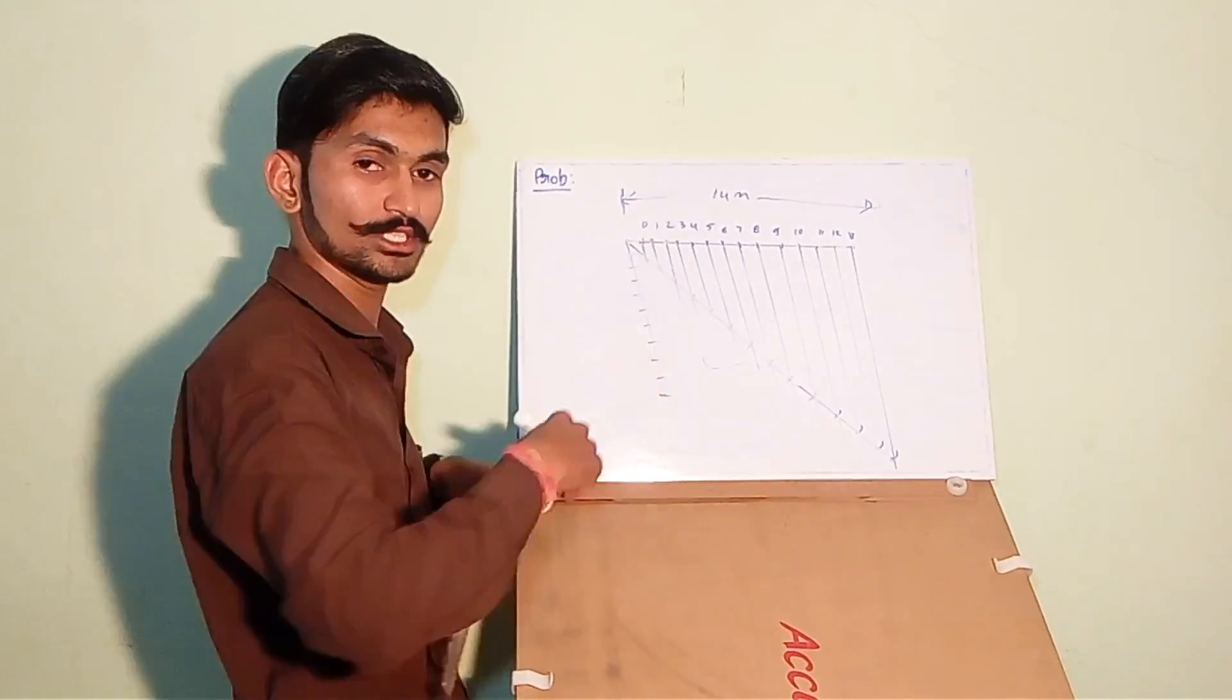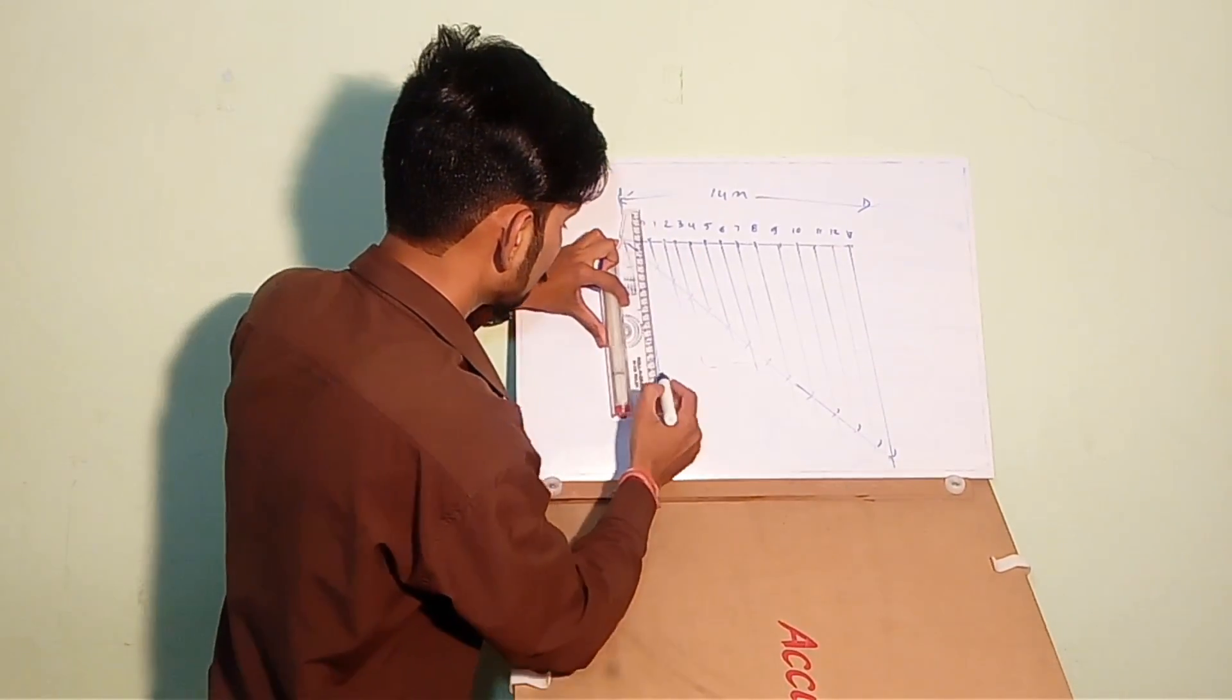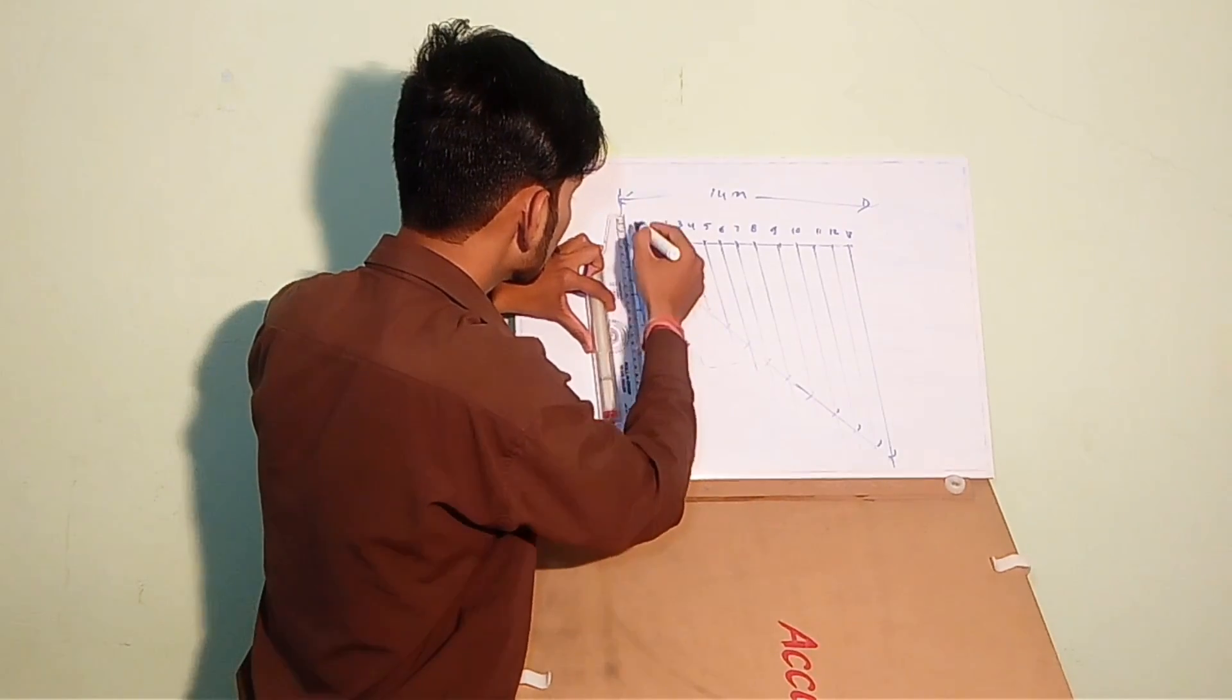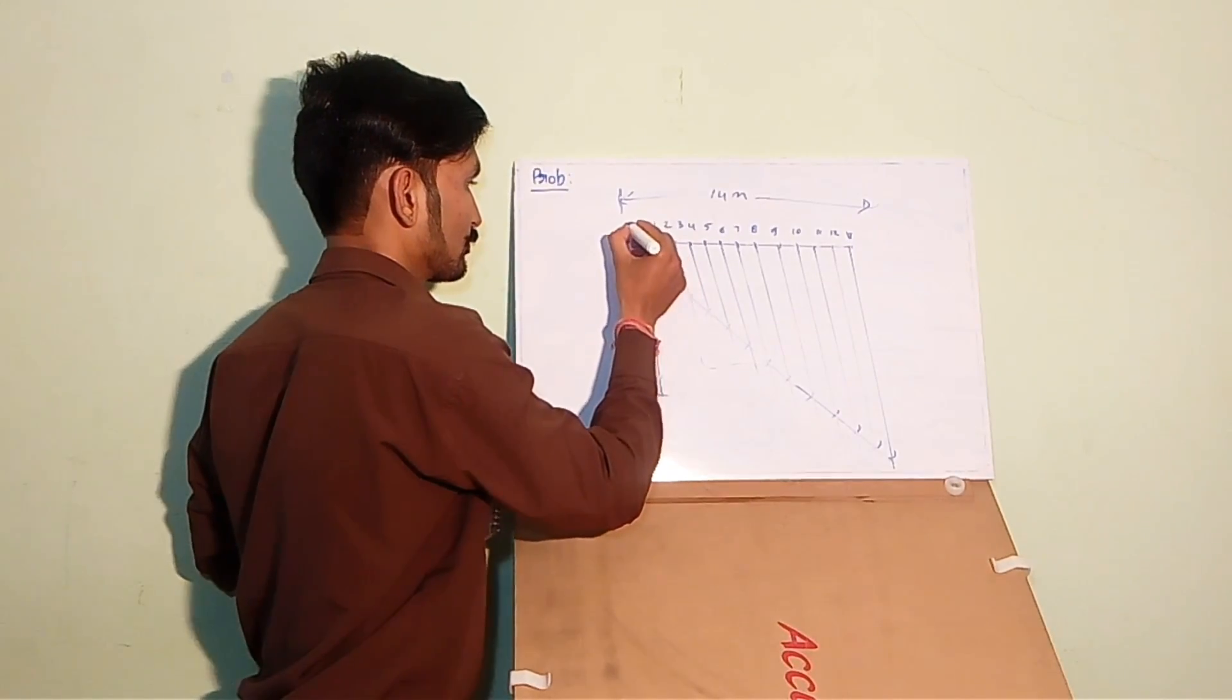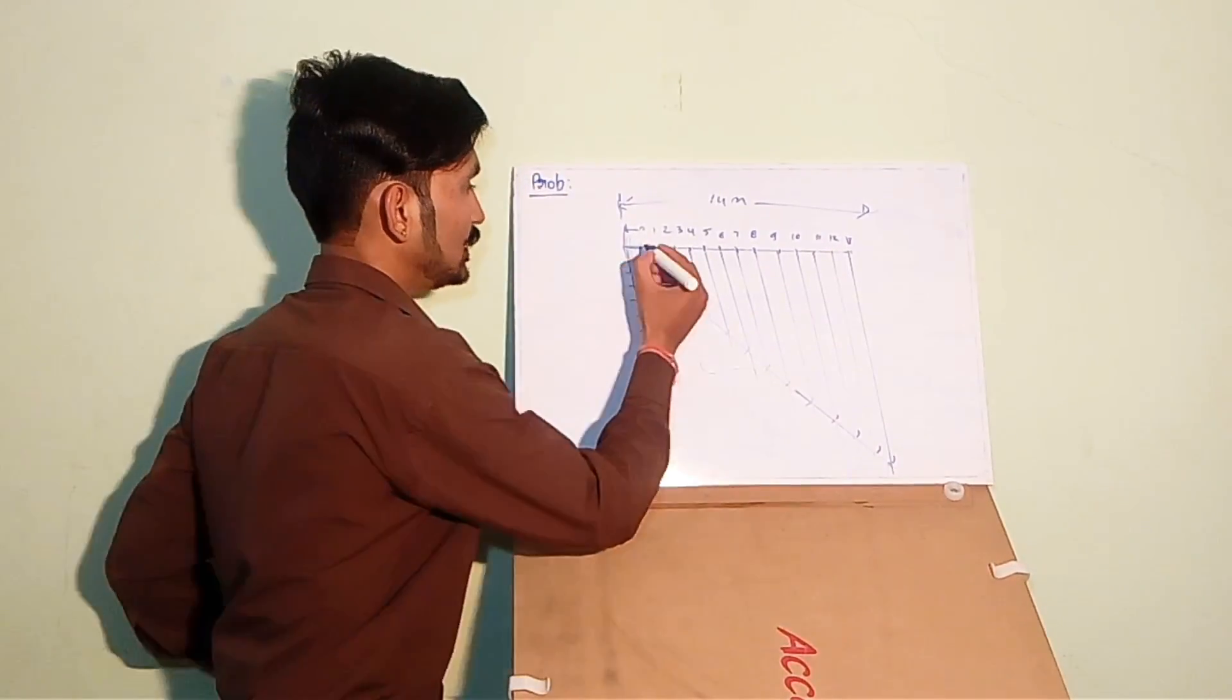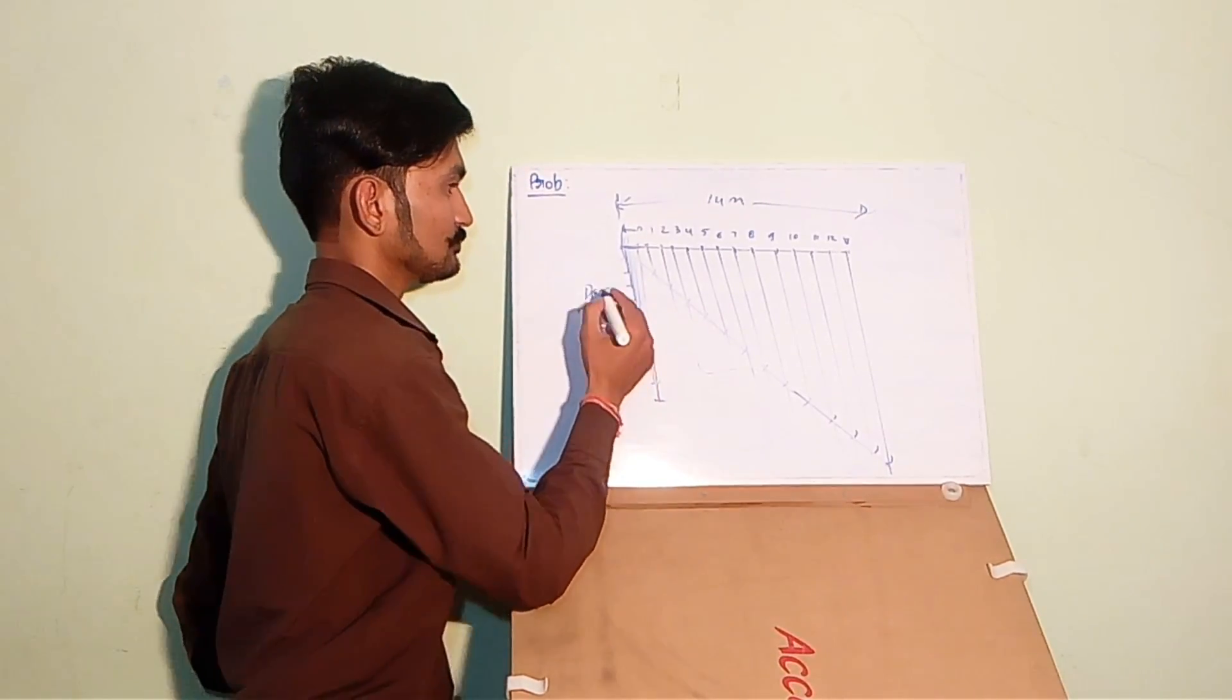Join this point to this point and draw lines parallel to this line from each point. So we have divided this one segment into 10 equal parts, and these parts will show decimeters.